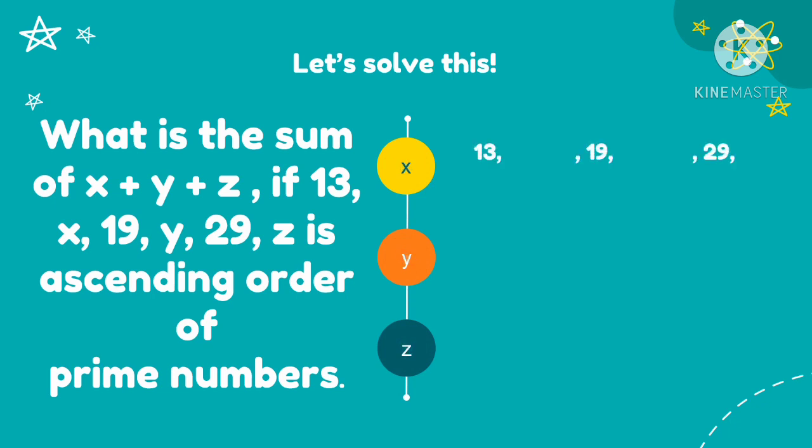There is a given condition. It says that 13, x, 19, y, 29, z are arranged in ascending order. So prime numbers in ascending order. So if this is 13, what is the next prime number after 13? So we're going to find the value of x, then the value of y, and the value of z.